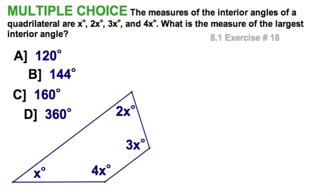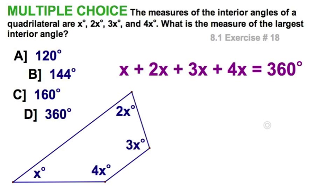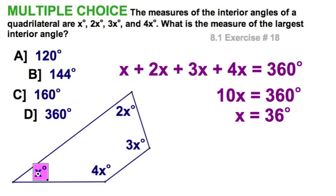Now I have a quadrilateral and I have four unknown angles. But they're all related by a factor of x. Add them all up. Set them equal to 360. Solve for x. It's 36 degrees. Remember though, that's x, or this small angle here. Your smallest angle is 36. Your largest angle is four times as big, or four x's. Four 36's are 144. The answer is b.